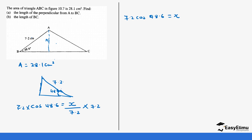You can calculate 7.2 cos 48.6 using the logarithmic method, or you can check the cosine table. When you go to the cosine tables and look up 48.6, you get 0.6613. So this is going to be multiplied by 7.2. When we multiply 0.6613 times 7.2 we get 4.76 as our value of x.